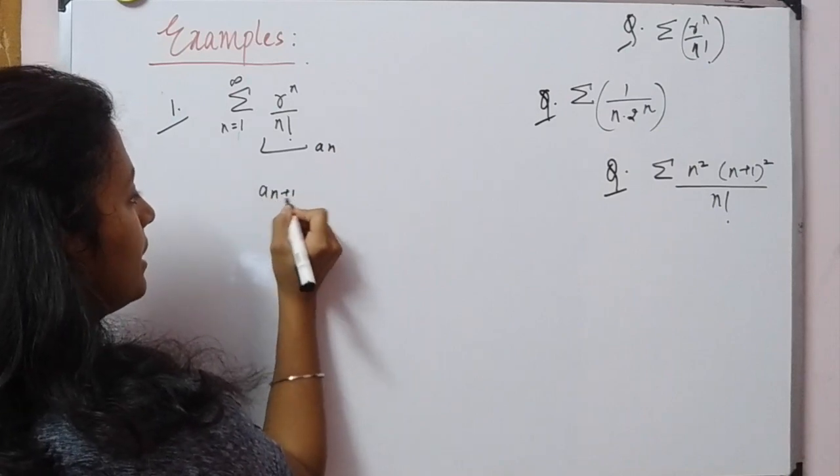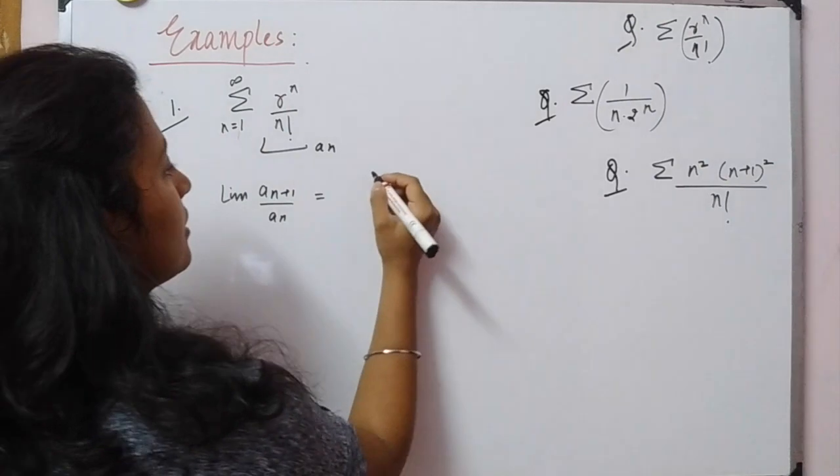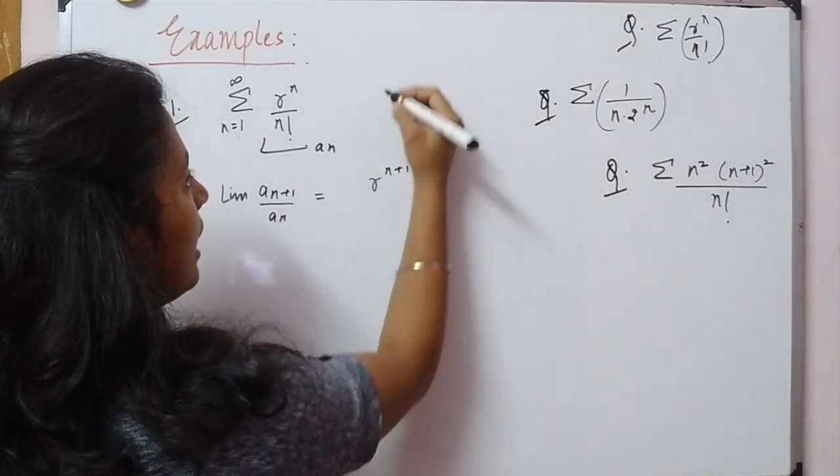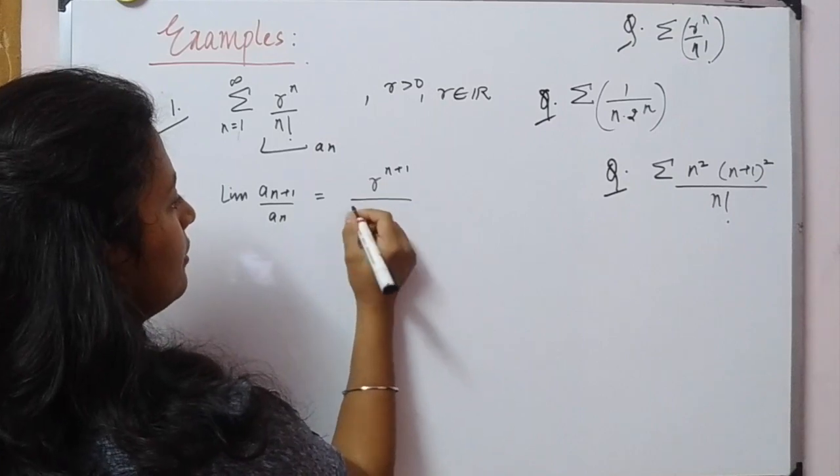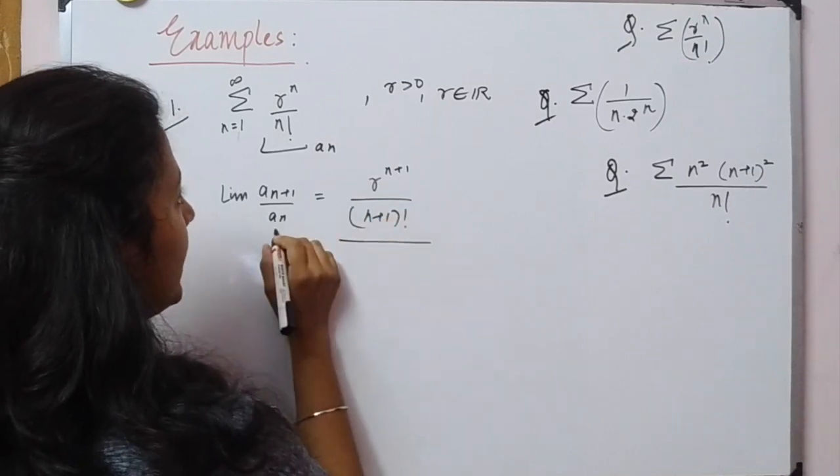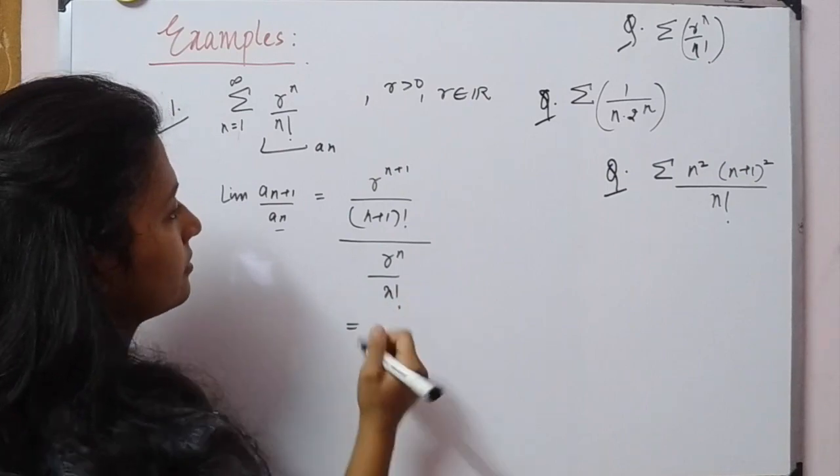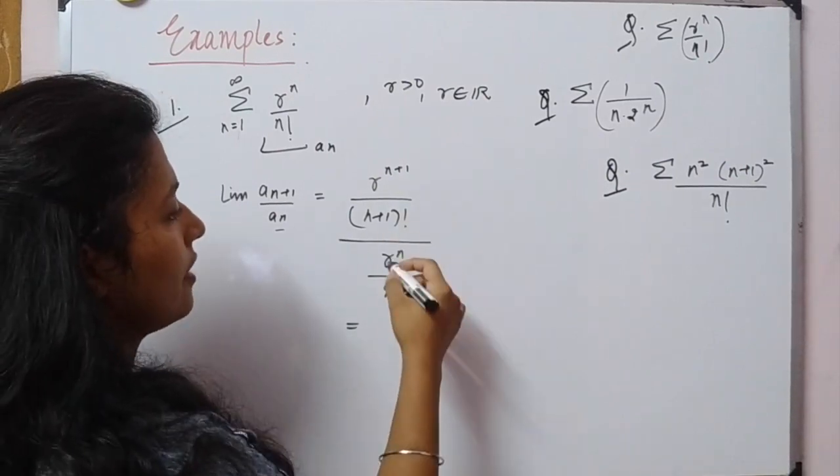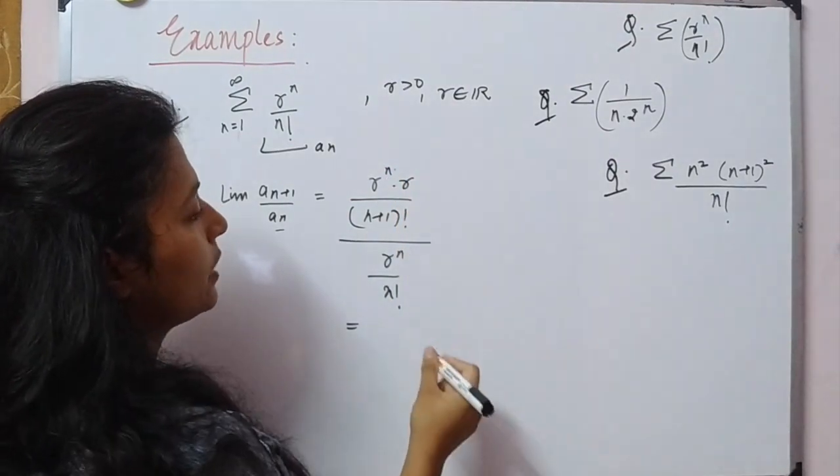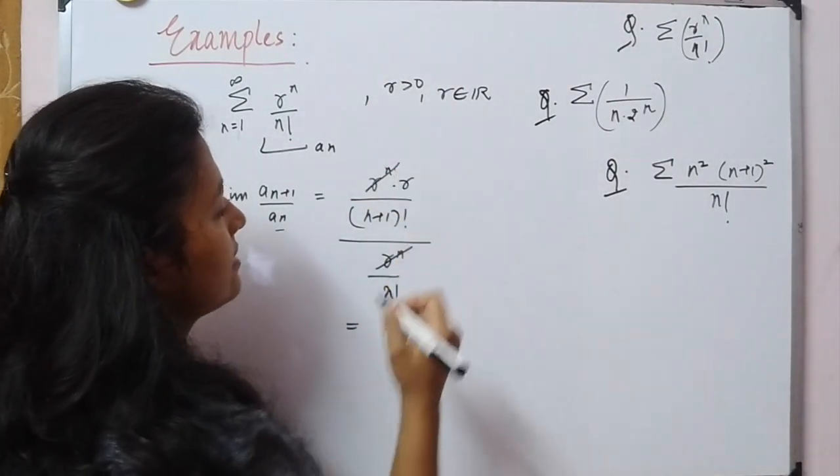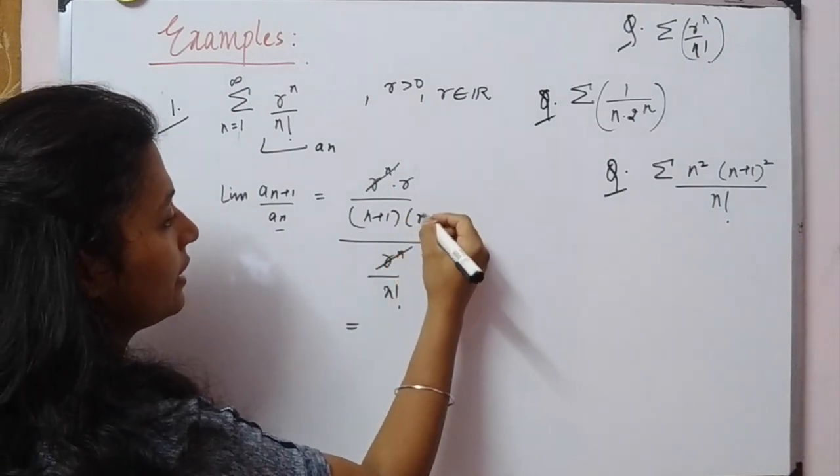So what we'll do here is this is our aₙ. We'll find lim aₙ₊₁/aₙ. We get r^(n+1), where r is some positive real number, over (n+1)! divided by aₙ. aₙ was given as rⁿ/n!. Now we can write r^(n+1) as rⁿ·r. The rⁿ terms cancel. (n+1)! can be written as (n+1)·n!, so n! cancels.